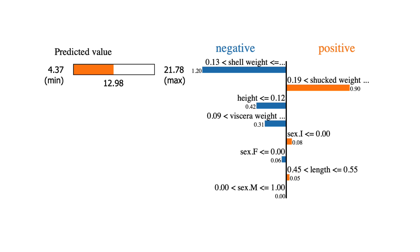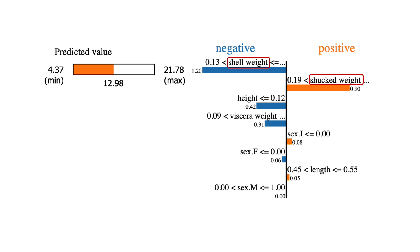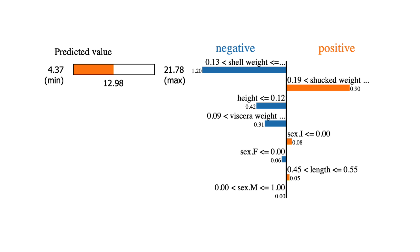You can see an example of the output from this package. It comes from a model used to predict the number of rings in an abalone shell. These bars give the LIME weights. We can see that for this prediction, the shell weight and shuck weight features are the most important. You can also see that they have had the opposite effect on the prediction, but we cannot tell exactly how they have contributed. For example, we cannot say that shell weight has decreased the prediction by 1.2 rings — the bars simply give us the relative importance of the features.